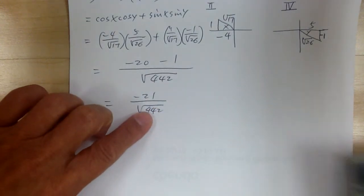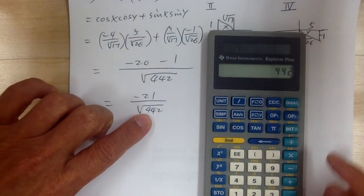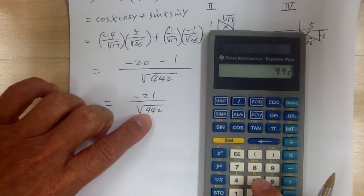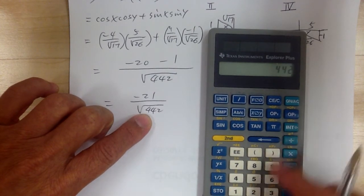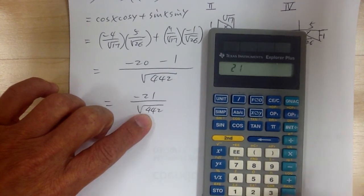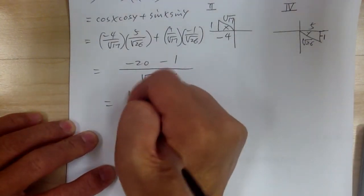Check if the square root of 442 simplifies — see if it is divisible. So divide by 21. That's it for number 31.